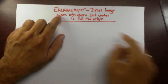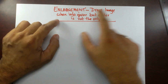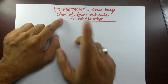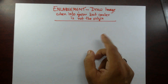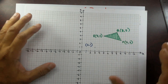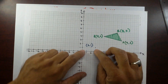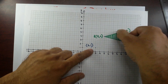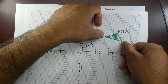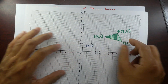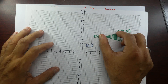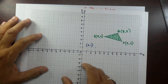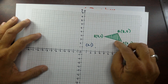Good morning students. Today we are going to cover enlargement — drawing the image when information is given but the center is not the origin. In my previous video, you have seen that whenever the center is given, you can draw lines through any points of the triangle and the center, then calculate the length of the line and use the scale factor to find the image.